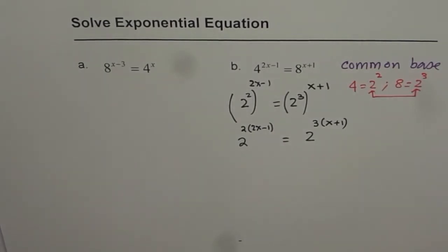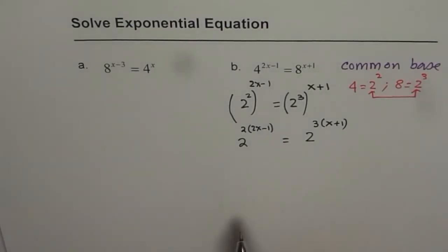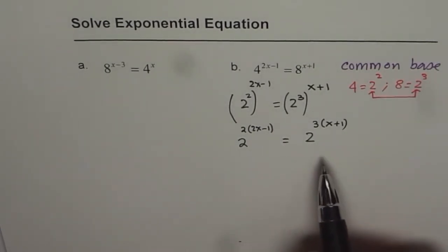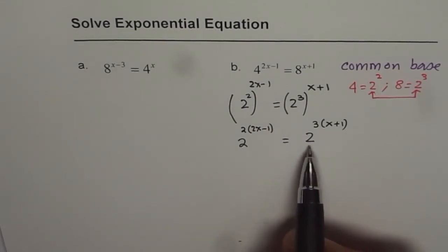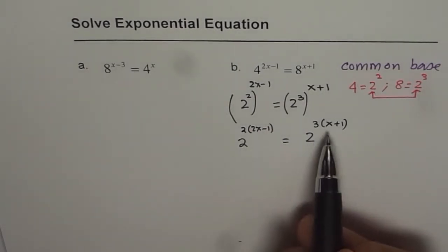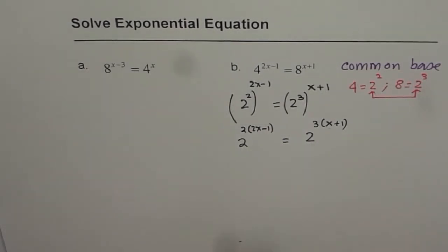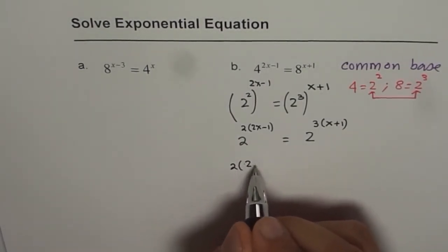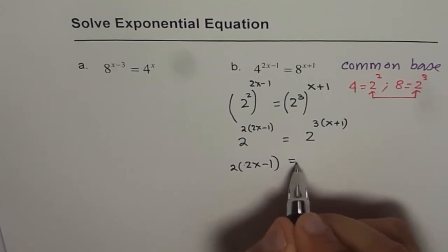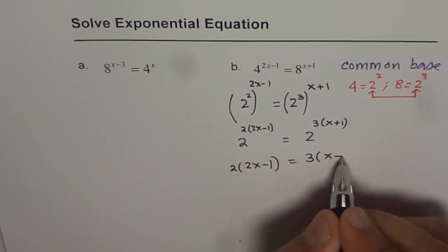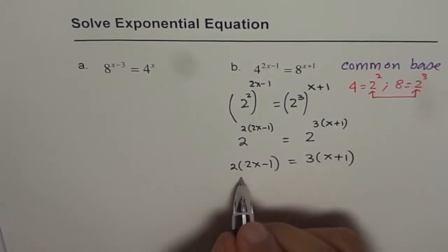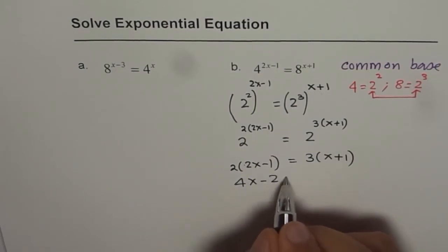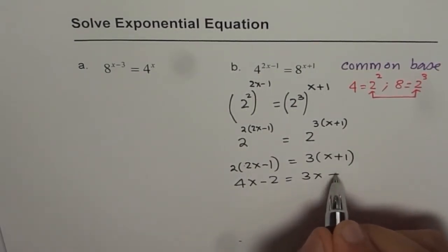Now since the bases are same, we can equate the exponents, right? That is the whole idea. Once you get the same base, you can equate the exponents and solve for the unknown value of x. So let's equate the exponents, which are 2 times 2x minus 1 equals 3 times x plus 1. Let's expand. We get 4x minus 2 equals 3x plus 3.